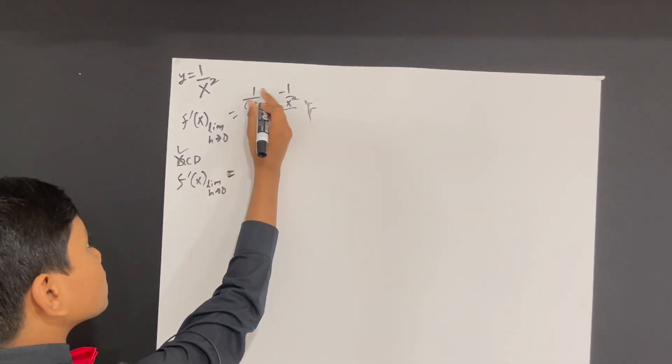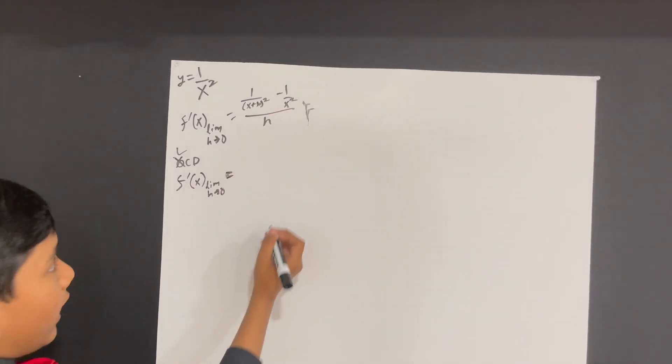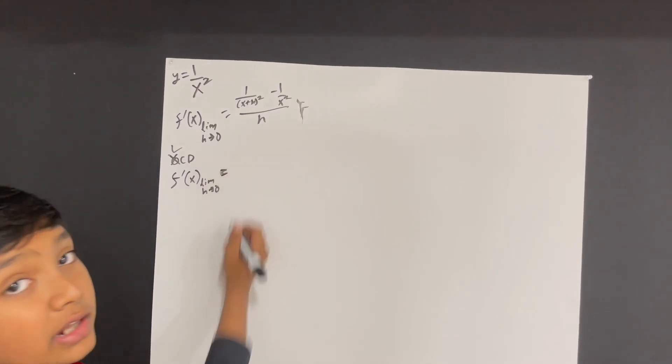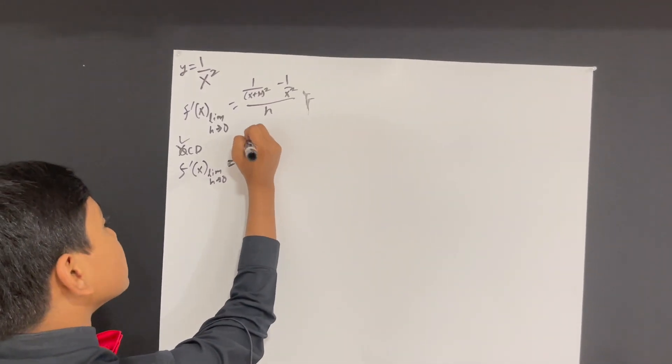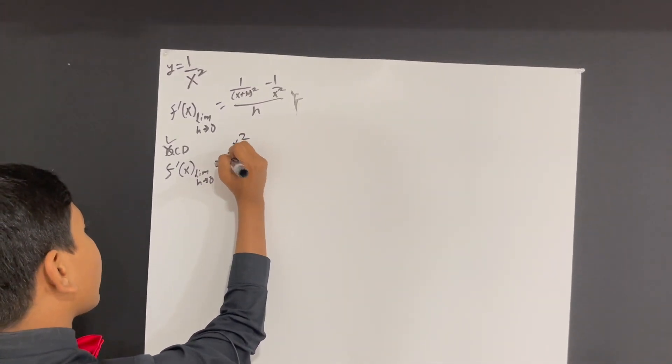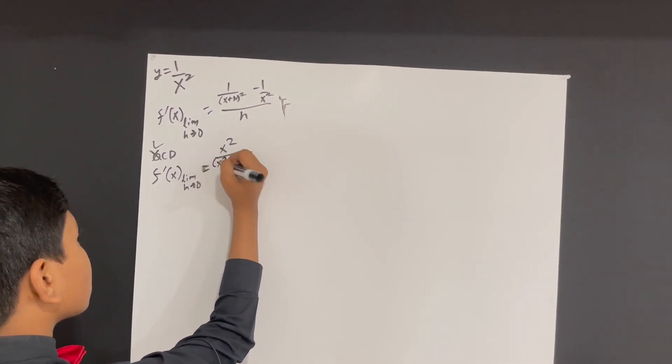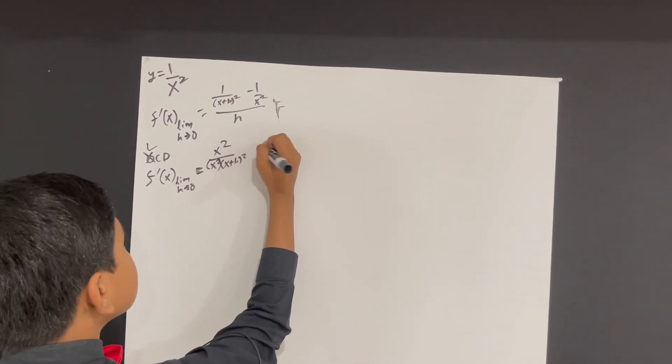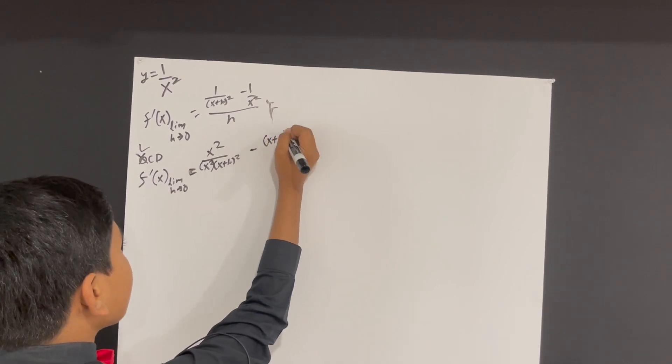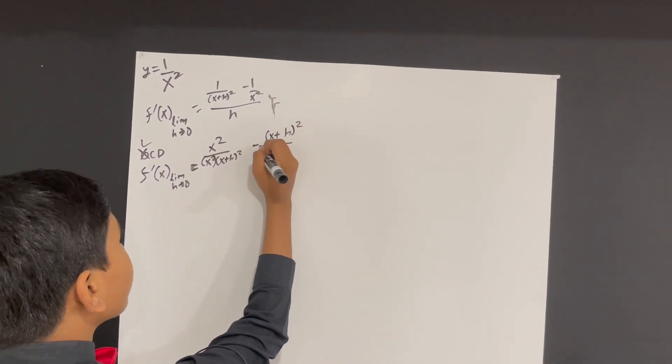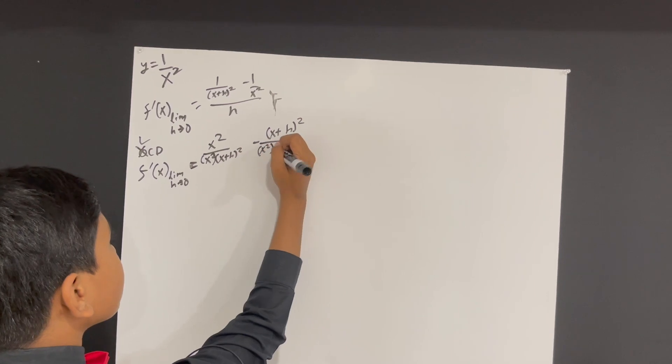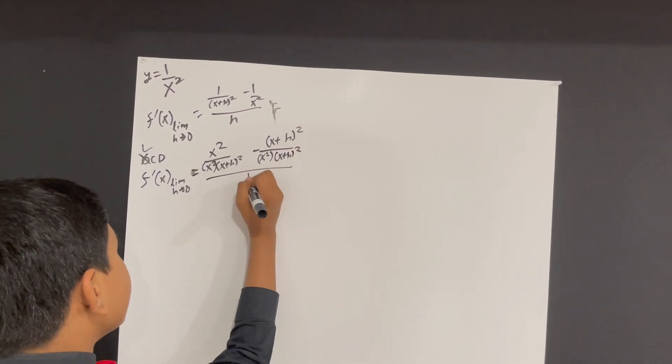So, of course, we're going to multiply this by x squared over x squared, which is still 1, so it doesn't affect the equation. So, we get x squared over x squared times x plus h squared, and then, it's subtracted by x plus h squared over x squared times x plus h squared over h.